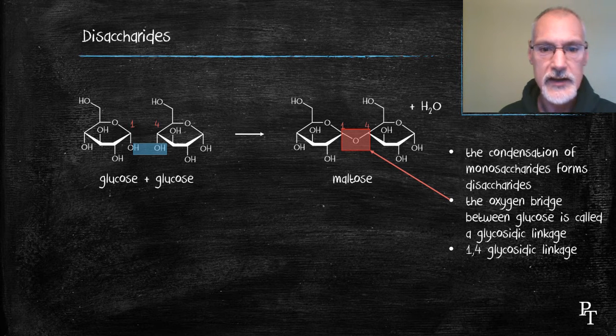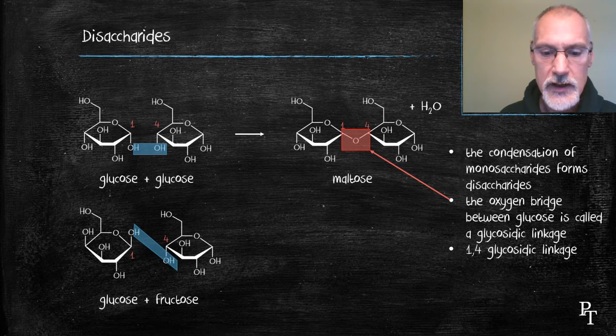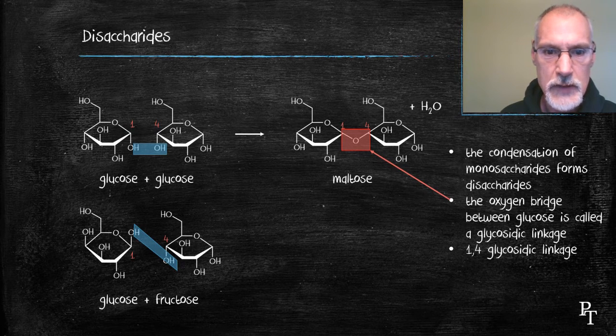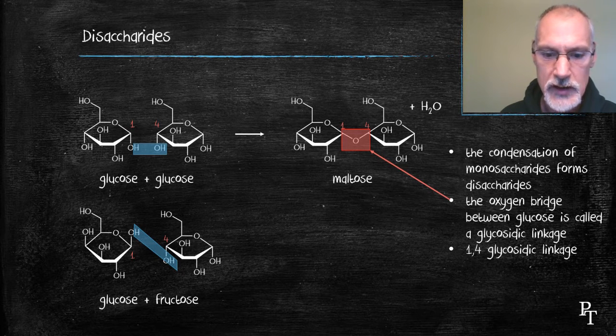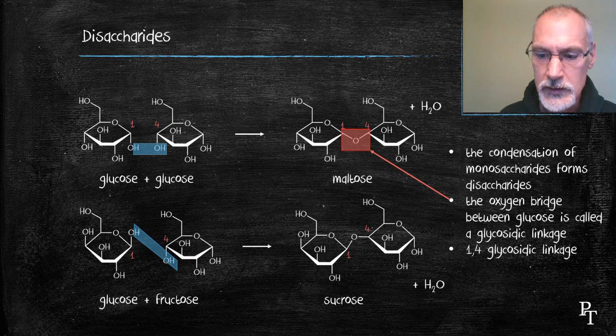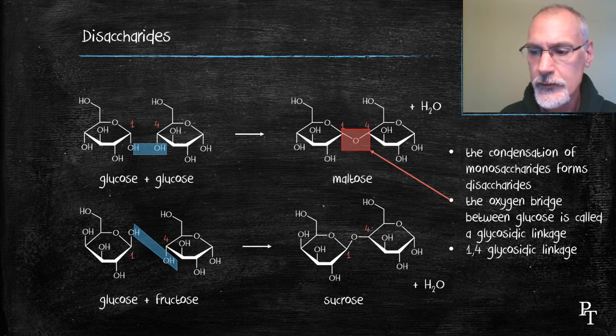I can also show a second disaccharide here with glucose combining with fructose. You'll notice the orientation of the OH molecules in this case is across the bond. Again, it'll join together with the removal of the water molecule to produce the molecule we call sucrose.